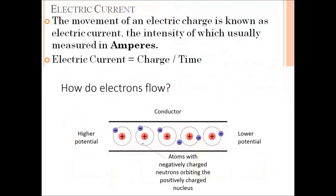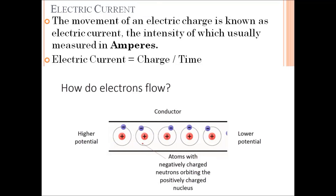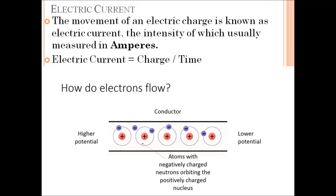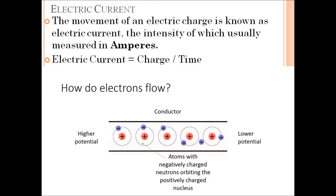Next we have electric current. Electric current is defined as the flow of charge per unit time, or the rate of flow of electric charge. Its intensity is measured in ampere. In the slide, you can see how electrons are moving from one end to the other end across the conductor. We will discuss this in detail in the next slide.